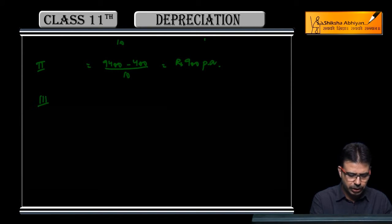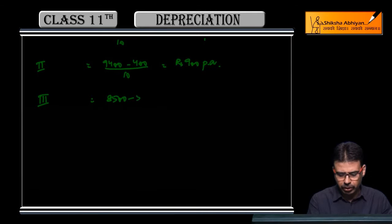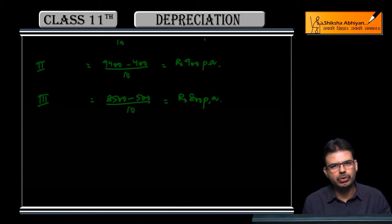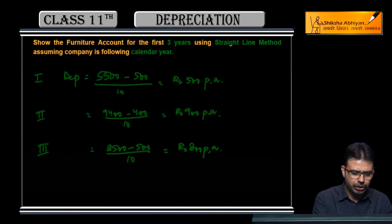Third furniture's cost is Rs. 8,500, scrap value will be Rs. 500, and its 10-year life means Rs. 800 per annum depreciation. So first, we found out the depreciation for all three furniture items.